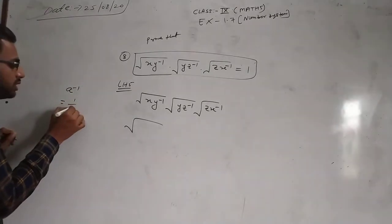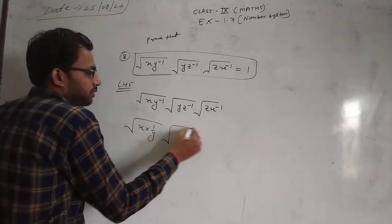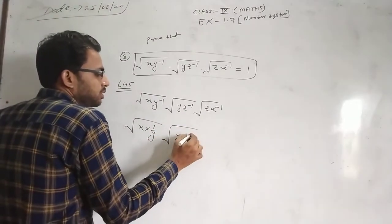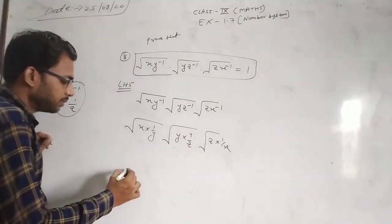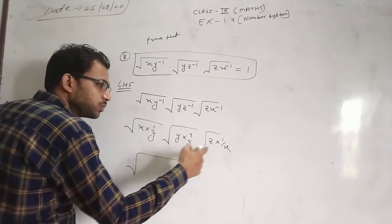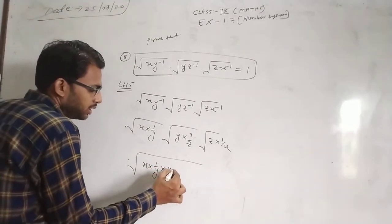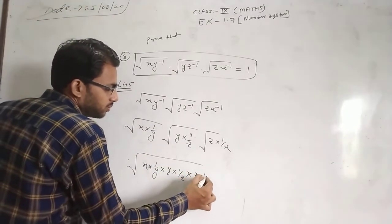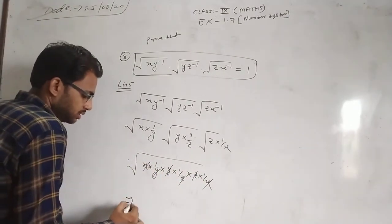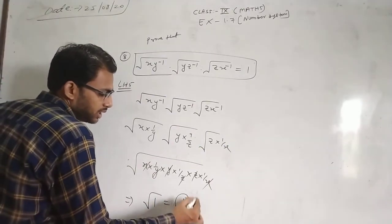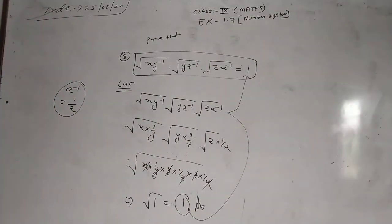First of all, take LHS. This is LHS and this is RHS. We have xy to power minus 1, yz to power minus 1, and zx to power minus 1. A to power minus 1 means 1 upon A. So you write x times 1 upon y, then y times 1 upon z, then z times 1 upon x. Then multiplying all: x upon y times y upon z times z upon x — the y cancels with y, z cancels with z, x cancels with x — giving 1, which equals RHS. This is our proof.